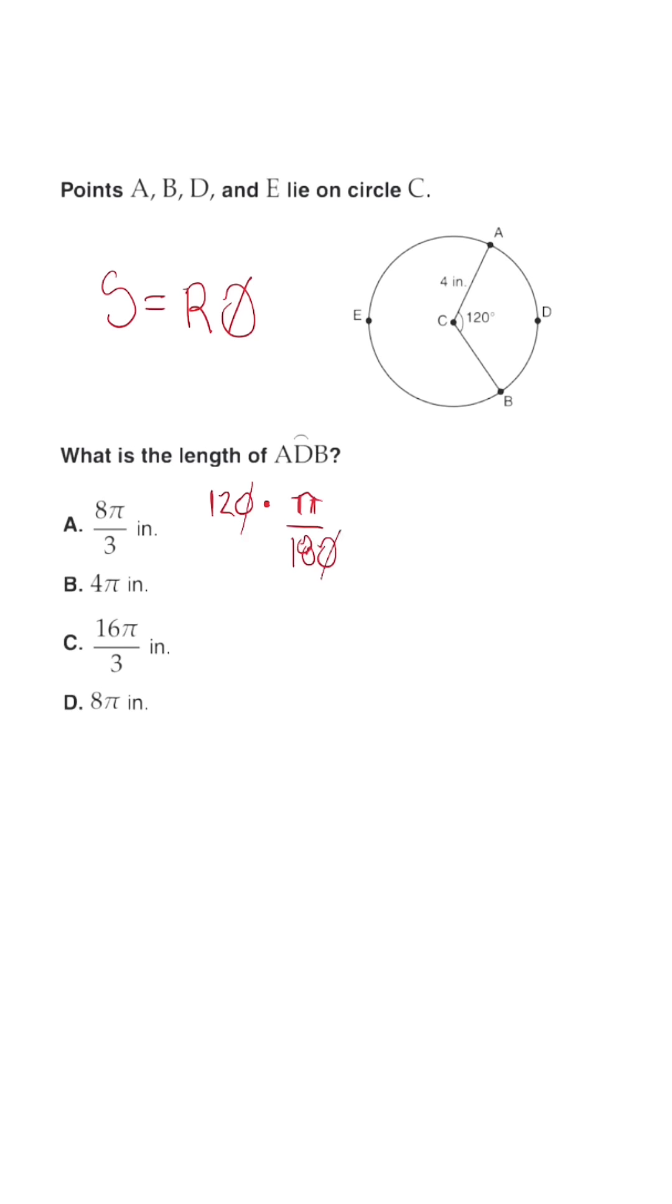Once we simplify, we're going to get 12 pi over 18, and once I reduce this fraction to its lowest terms, let's say we divide by 6, we're going to get 2 pi over 3.